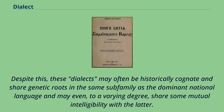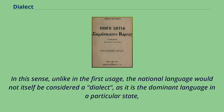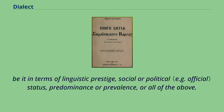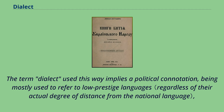Despite this, these dialects may often be historically cognate and share genetic roots in the same subfamily as the dominant national language, and may even share some mutual intelligibility with it. In this sense, unlike in the first usage, the national language would not itself be considered a dialect, as it is dominant in terms of linguistic prestige, social or political status, and prevalence. The term dialect used this way implies a political connotation, being mostly used to refer to low-prestige languages lacking institutional support or perceived as unsuitable for writing.